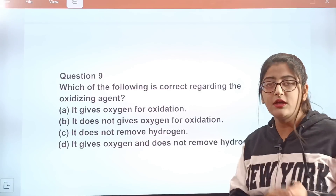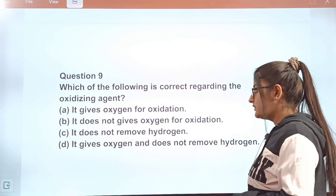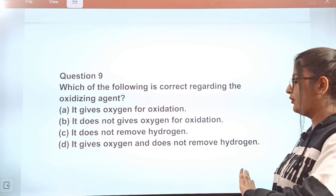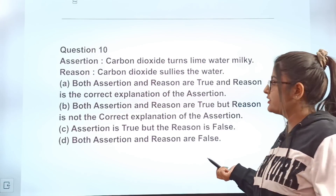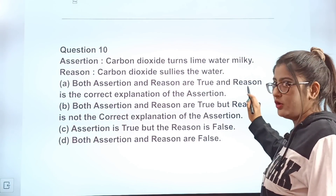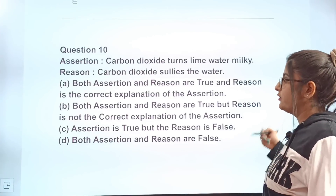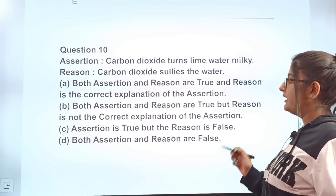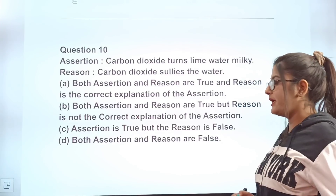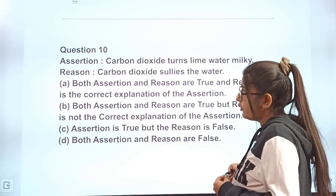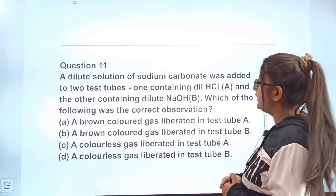Question 9: Which of the following is correct regarding an oxidizing agent? A: it gives oxygen for oxidation. B: it does not give oxygen for oxidation. C: it does not remove hydrogen. D: it gives oxygen and does not remove hydrogen. Correct answer: A — it gives oxygen for oxidation. Question 10 is another assertion-reason question. Assertion: carbon dioxide turns lime water milky. The correct answer is C — assertion is true but reason is false.